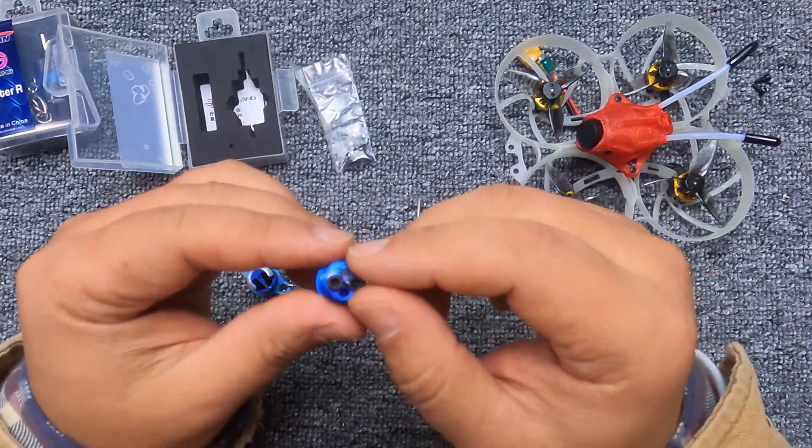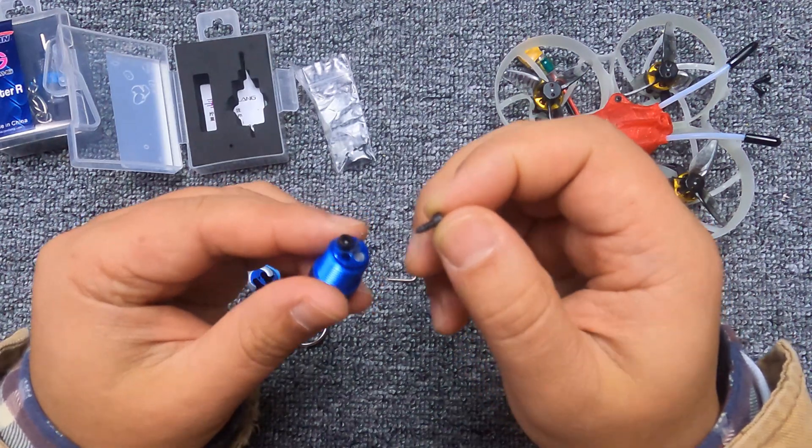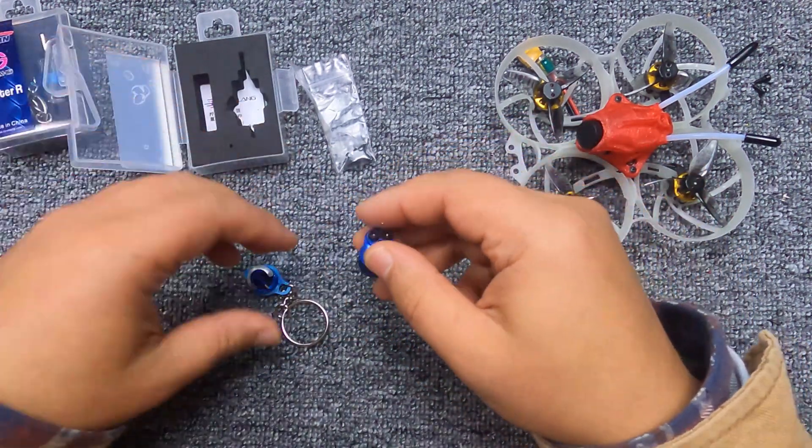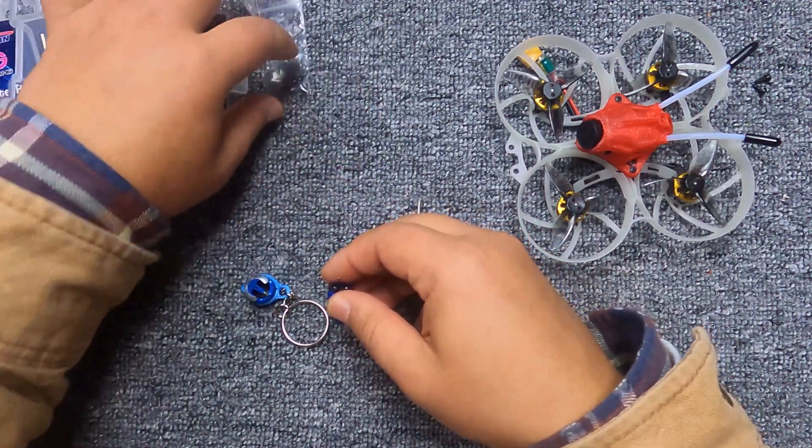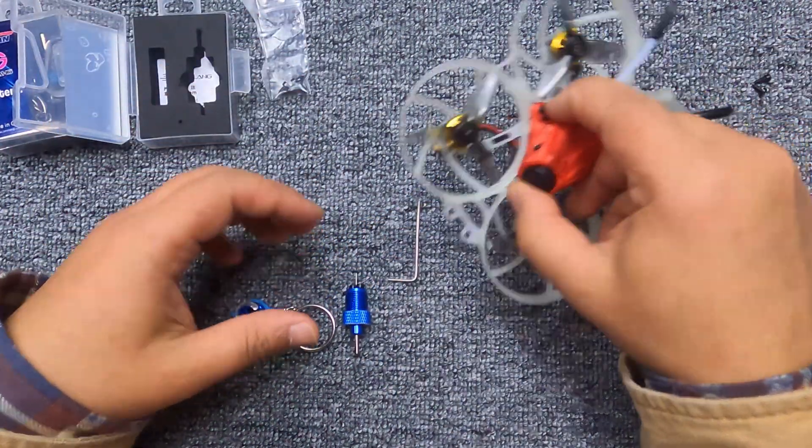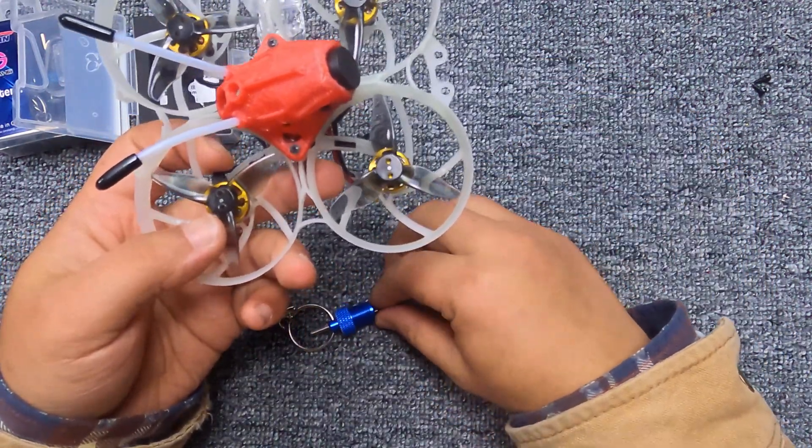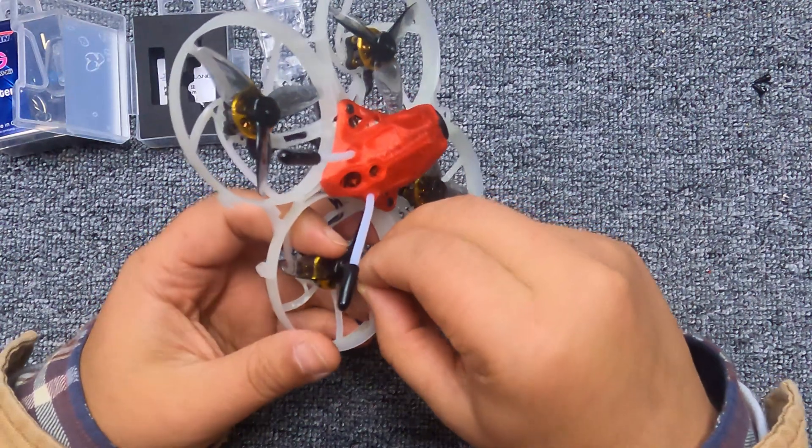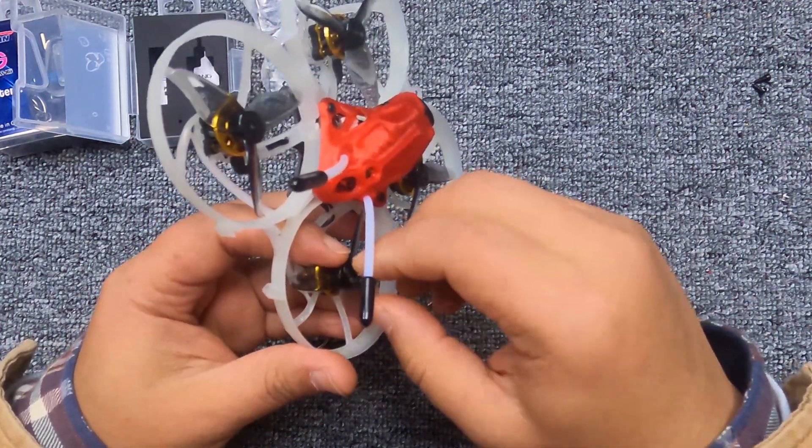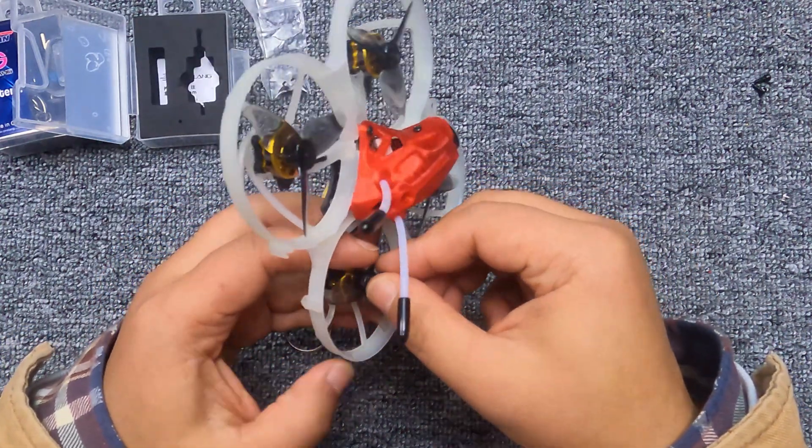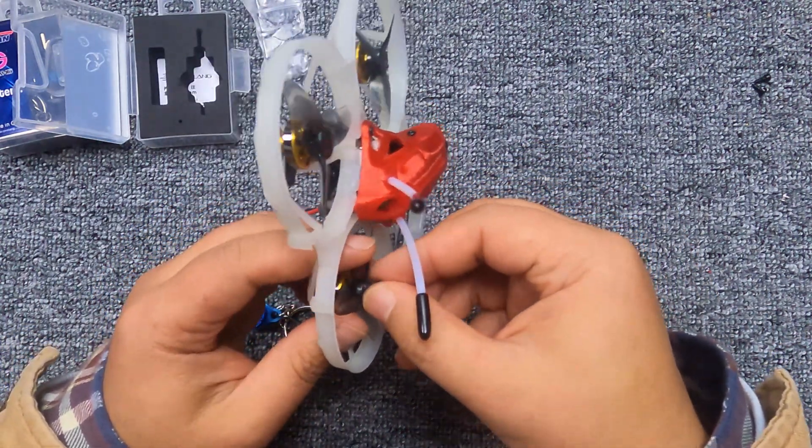When you plan to remove any propeller from your drone, you have to first screw in these two screws into your propeller.